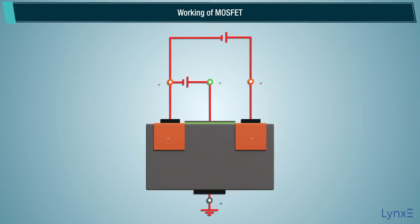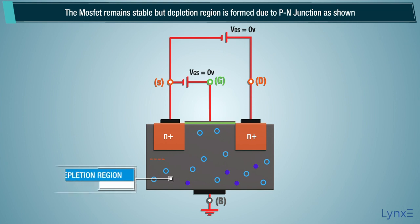Working of MOSFET. Let's consider VGS and VDS is equal to zero volts. The MOSFET remains stable, but depletion region is formed due to PN junction as shown.